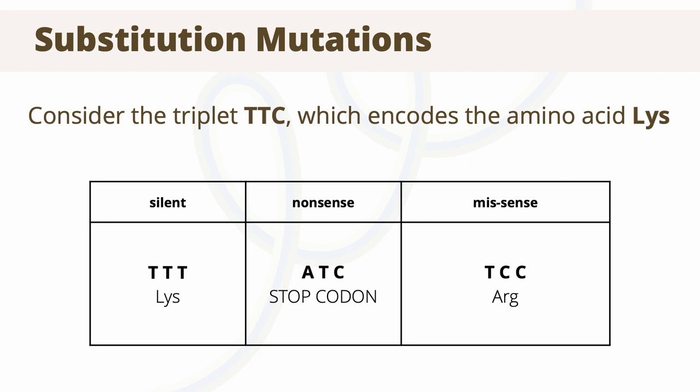In the second example, the triplet is changed to ATC, which happens to code for a stop codon, meaning that the DNA sequence after this triplet will no longer be encoded — this usually has a significant effect on the DNA sequence. However, if the triplet were changed to TCC, the amino acid would be arginine. This new amino acid may have similar or very different functions to lysine, which may then alter protein function.